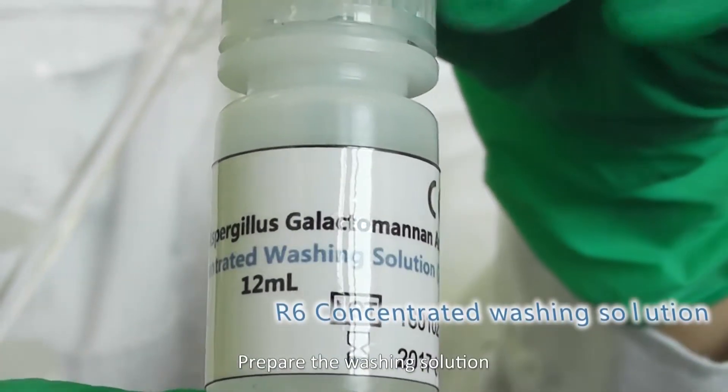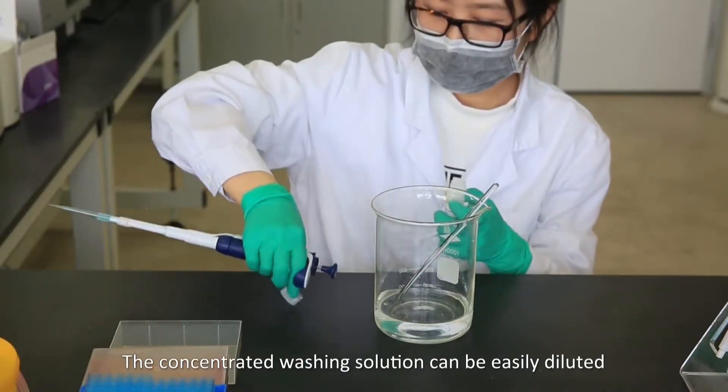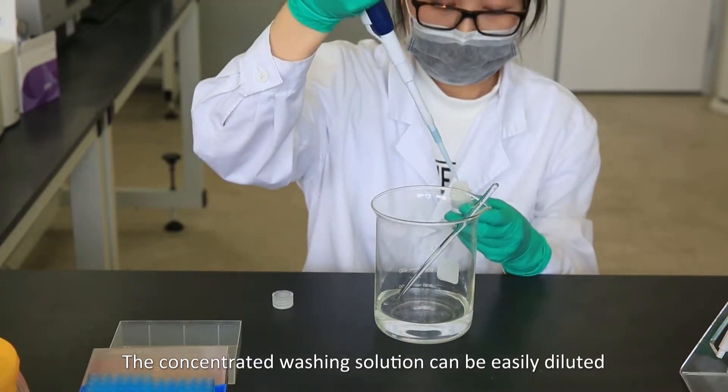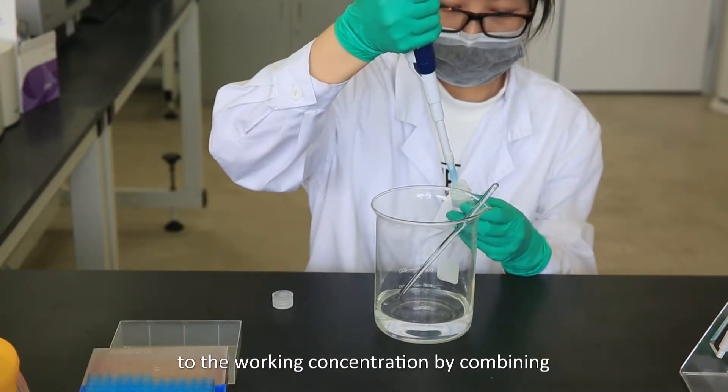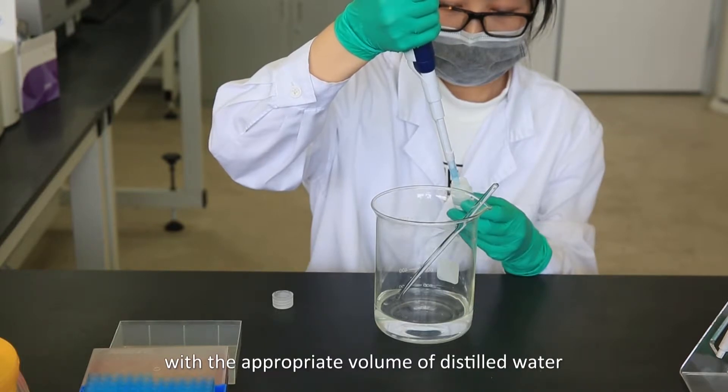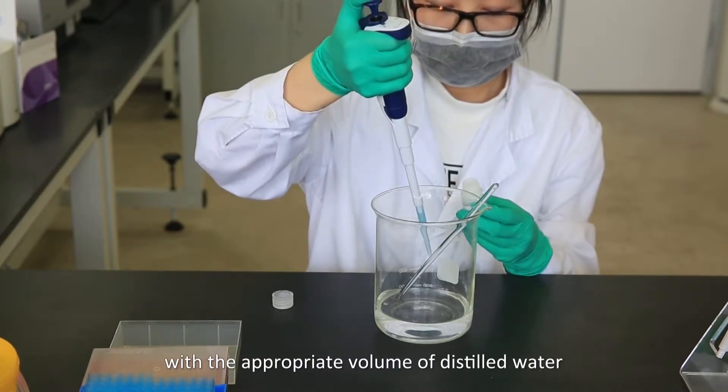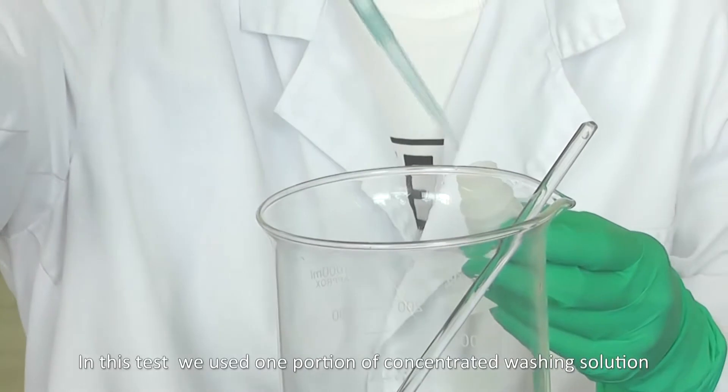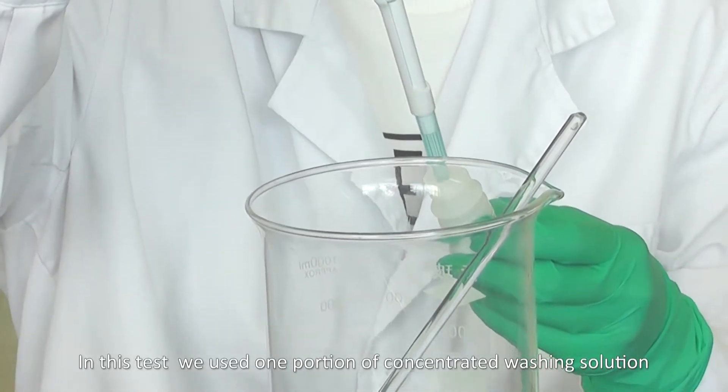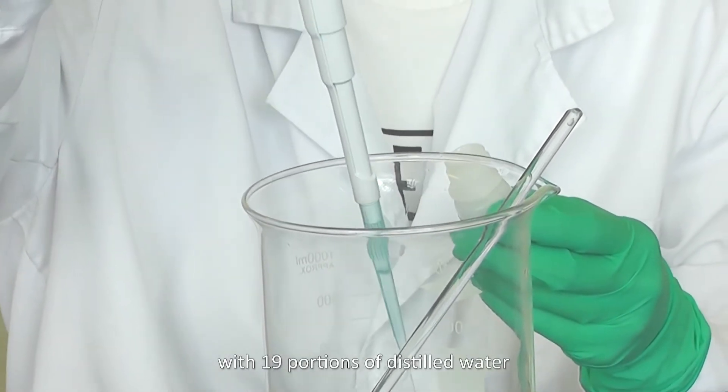Prepare the washing solution. The concentrated washing solution can be easily diluted to working concentration by combining with the appropriate volume of distilled water. In this test, we used one portion of concentrated washing solution with 19 portions of distilled water.